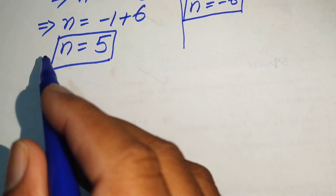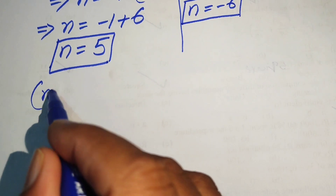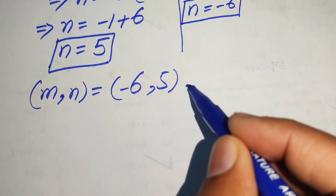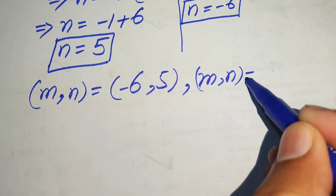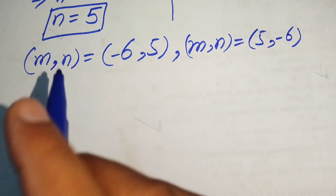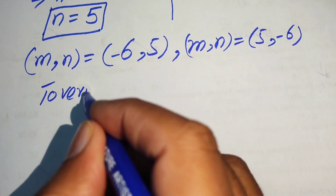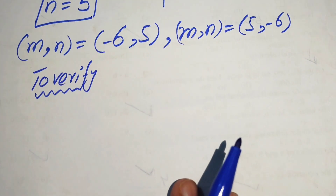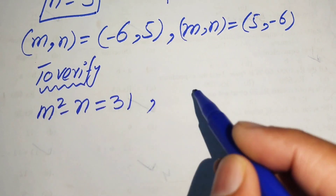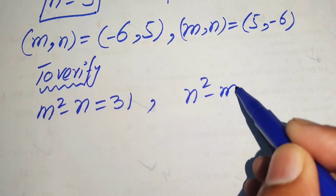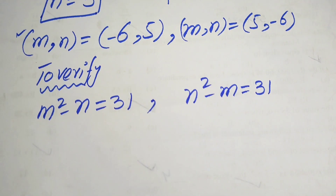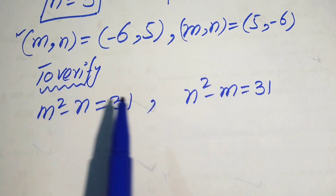Our final conclusion is that there are two solutions: the first solution is m, n equals minus 6 and 5, and the second solution is m, n equals 5 and minus 6. These are two symmetric solutions. Now we verify them. The given equations are m squared minus n equals 31 and n squared minus m equals 31. I will verify the first solution and leave the second for you.